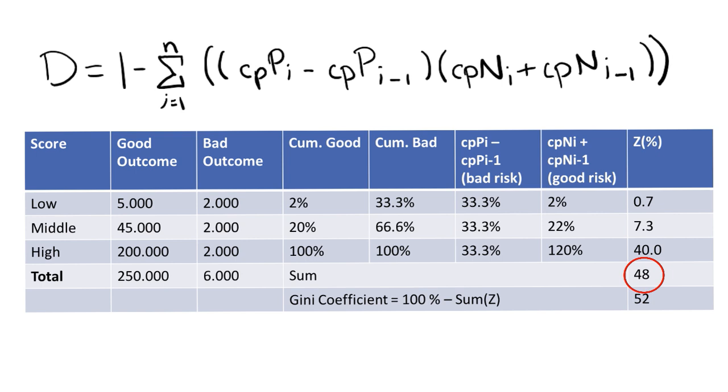Finally, the Gini coefficient is obtained by using this formula: 100% minus the sum of Z values. So we have 100% minus 48%, and we obtain a Gini coefficient value of 52% or 0.52.